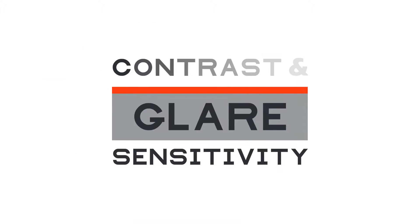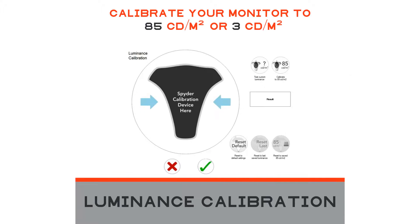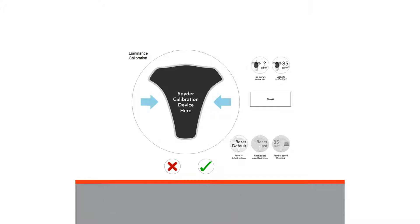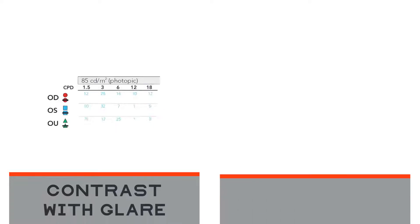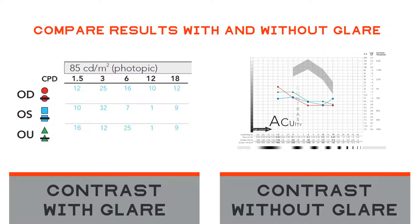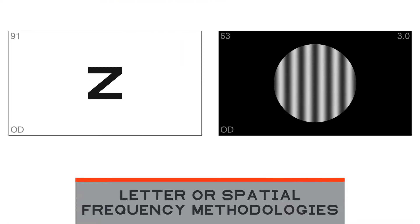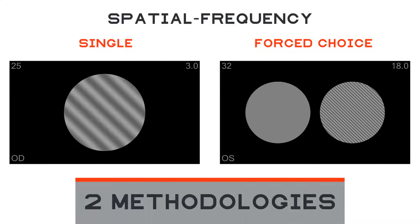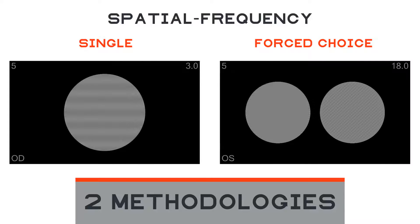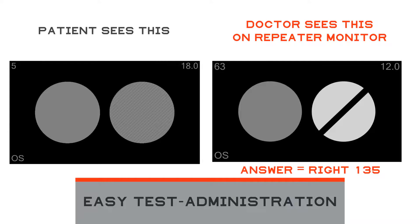Unique contrast sensitivity and glare disability testing, with a luminance calibrator for standardized outcomes. Test contrast under glare and use the report to compare contrast with and without glare. Test using letters or spatial frequency. Spatial frequency is tested with single or dual targets, while you see the correct results on the repeater monitor.